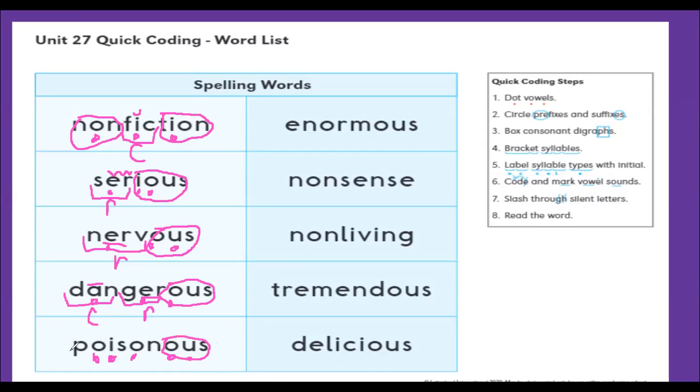Then 'poi' 'sun'. And we know that O-I we underline and it's a vowel team. 'Sun', the O makes a schwa, so we put our upside-down E, and it's a closed syllable.